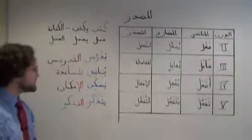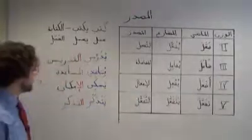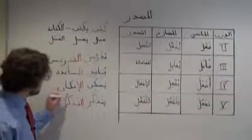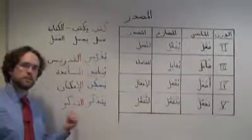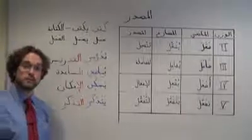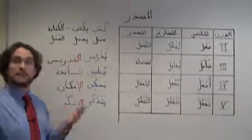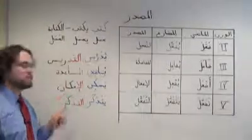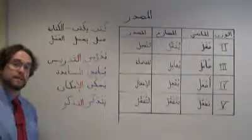ذ ك ر. But notice here that we have a شدة with a ضمة over it. So we need to be careful to include that in our derivation of the مصدر. التذكر. Otherwise it might sound like conjugated first-person present tense, أتذكر - I remember. But we need to hear that شدة with the ضمة over it, التذكر, to know that we're talking about the abstract idea of memory.